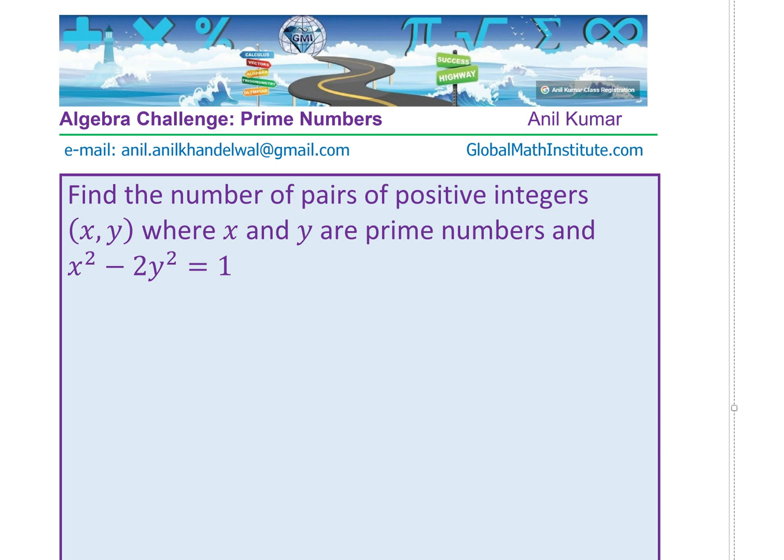The question is: find the number of pairs of positive integers (x, y) where x and y are prime numbers, and x² - 2y² = 1.